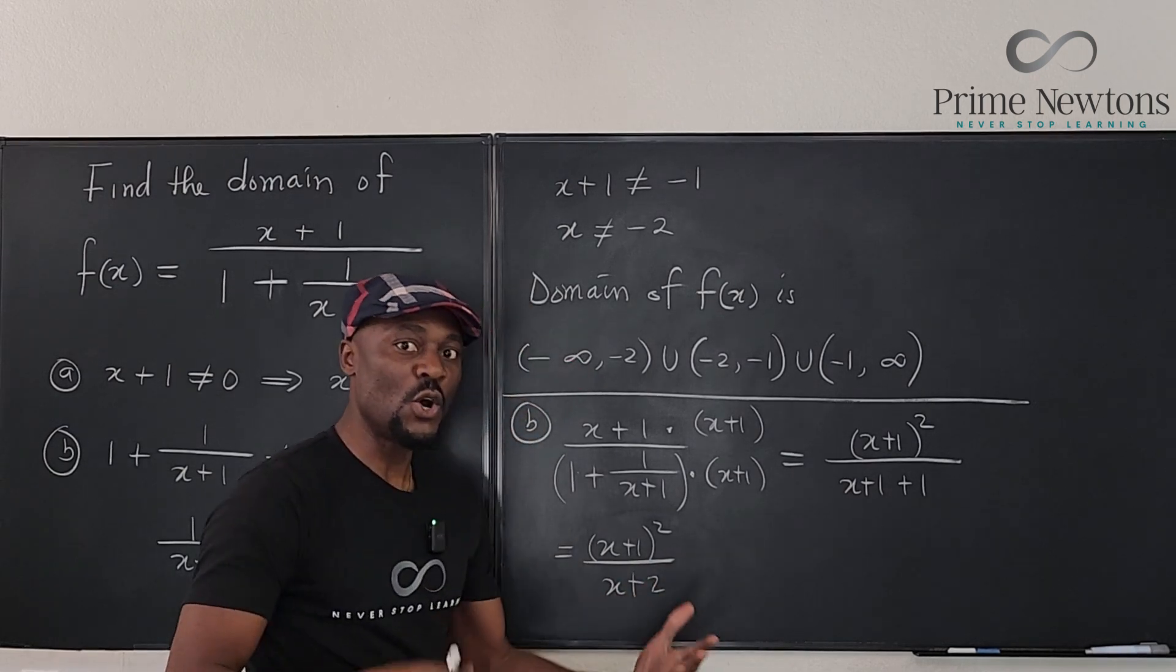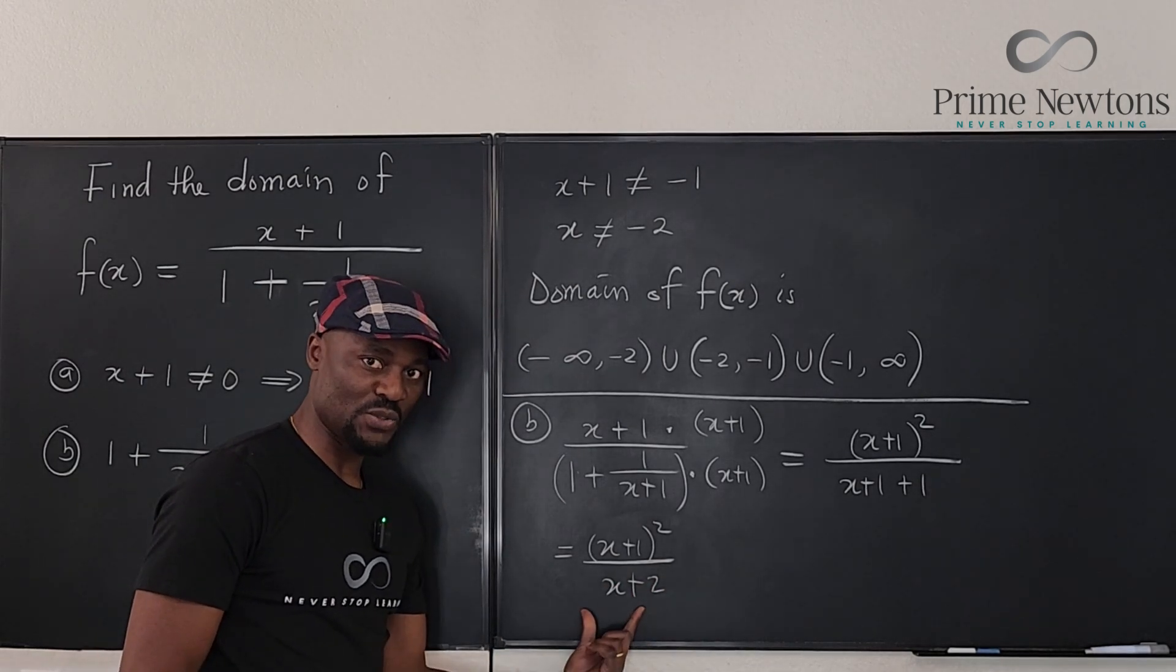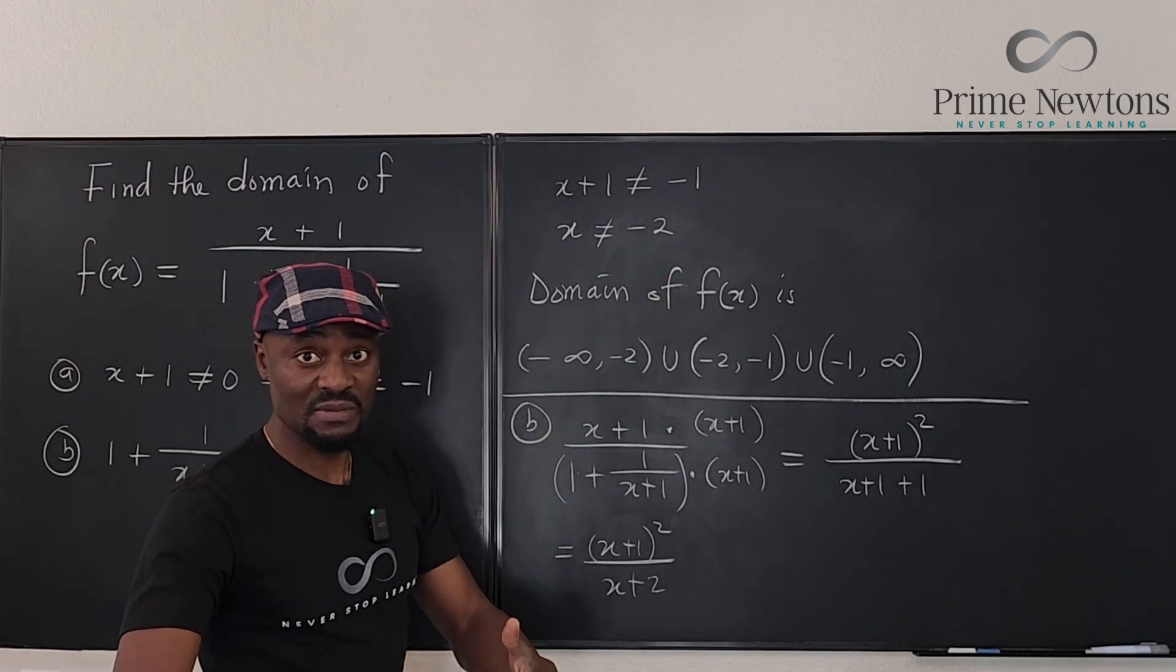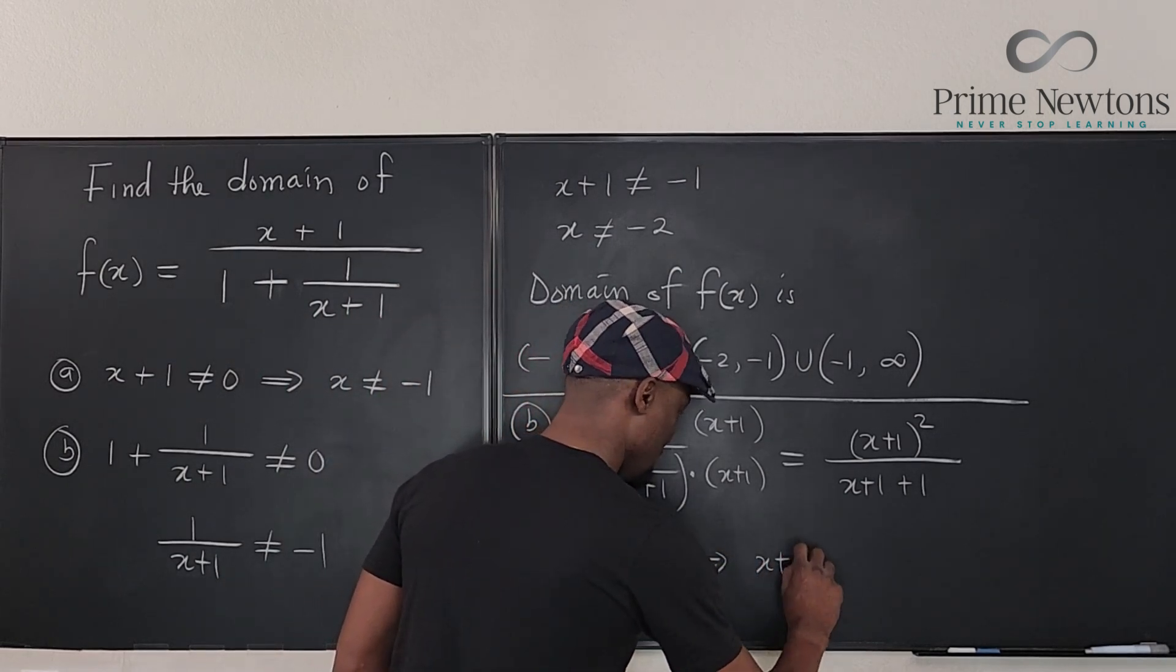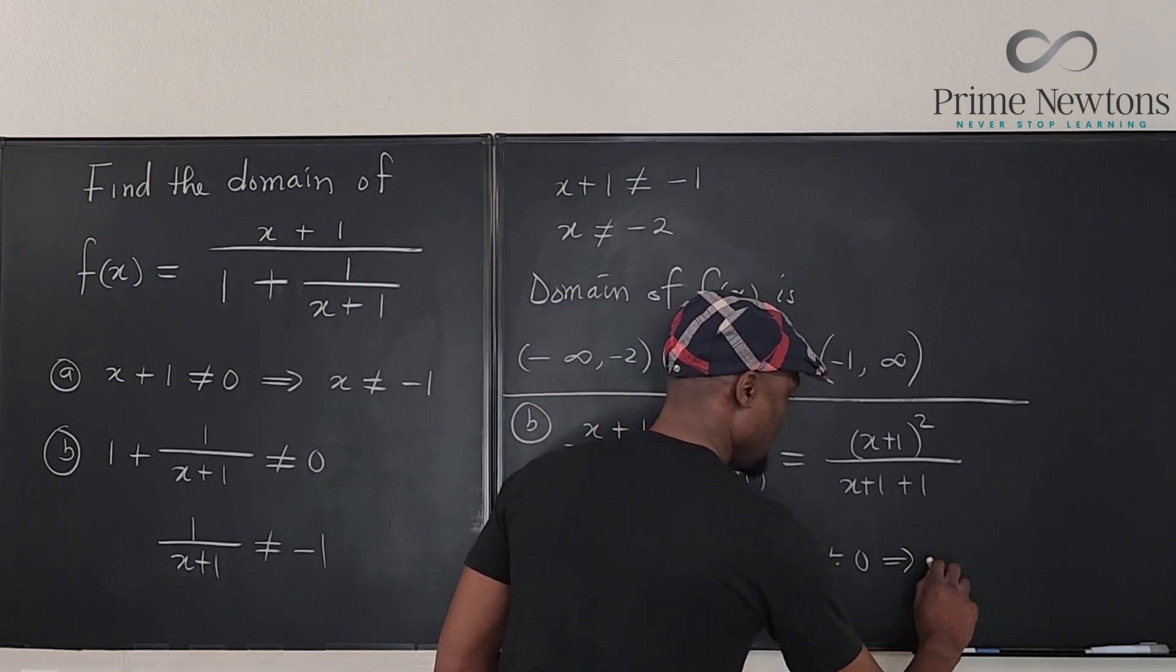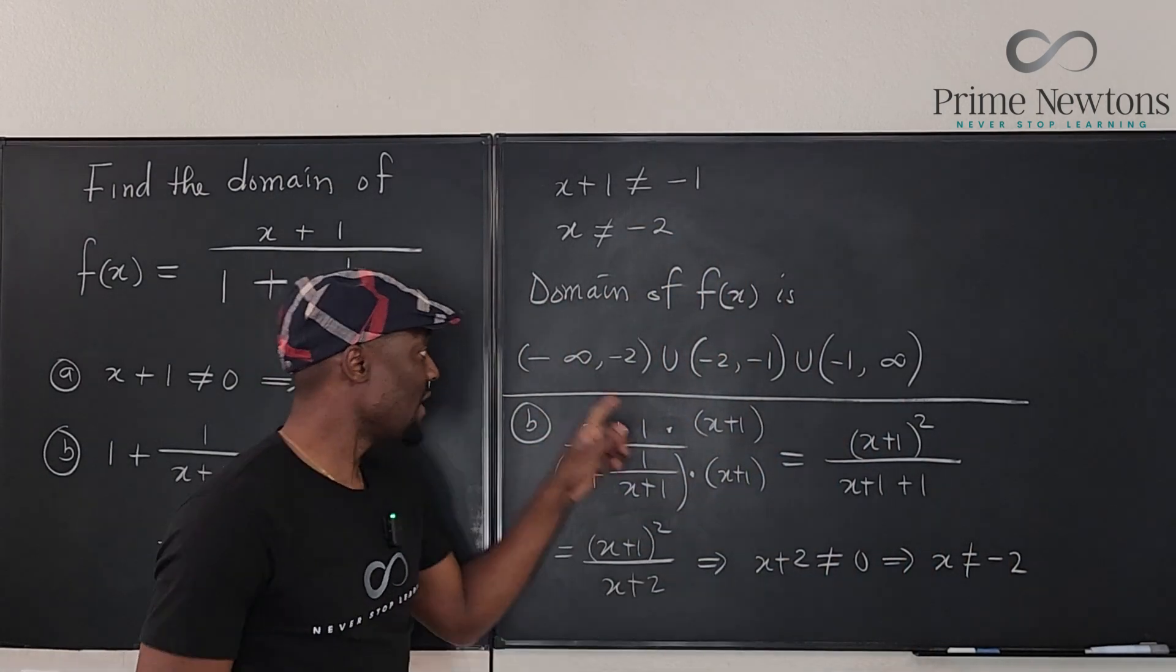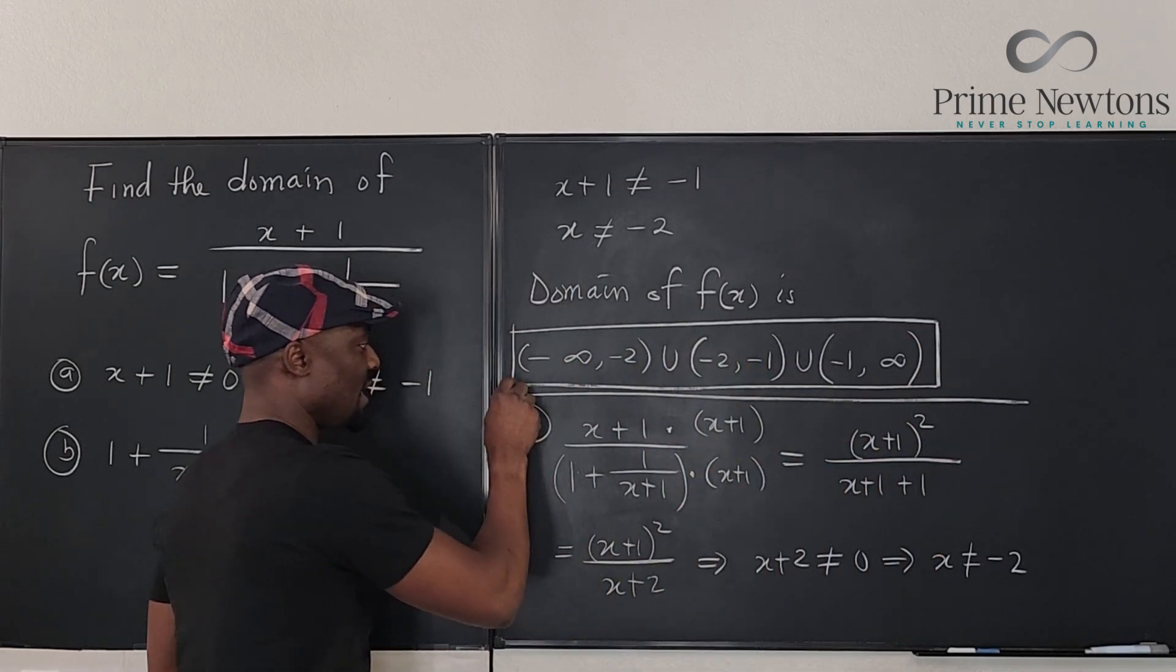Now you can go back and find the number to exclude. Definitely what makes this denominator equal to 0 is when x equals negative 2, which is the same thing we got when we did not simplify. So this implies x plus 2 cannot be equal to 0, which implies x is not equal to negative 2, which is the same as what we got here. And then you can write out your domain, which is the same thing as we got in the first case.